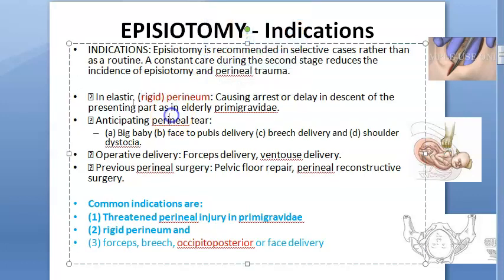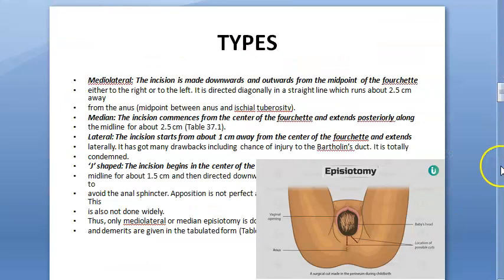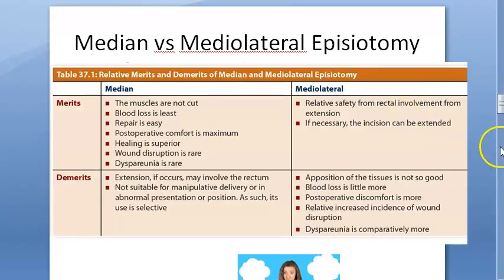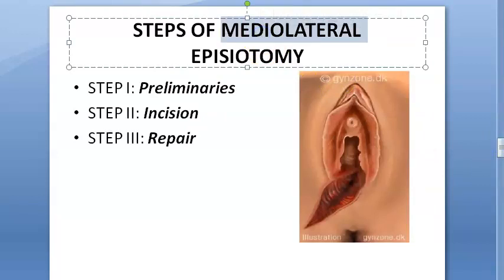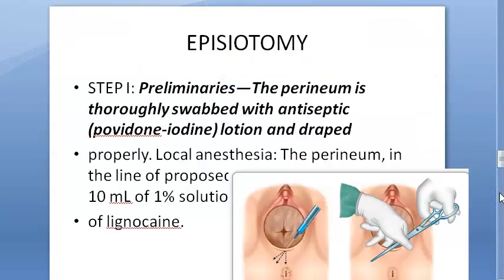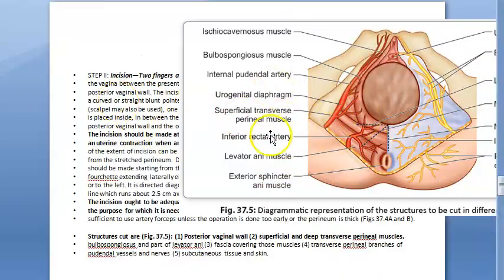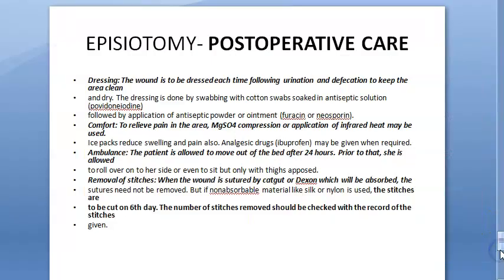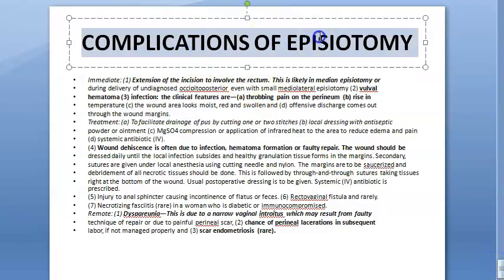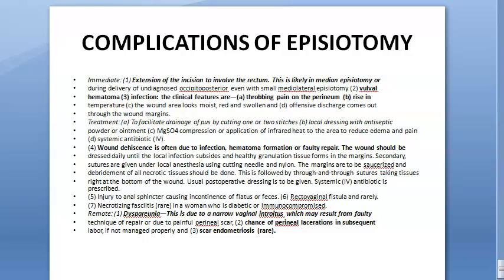An inelastic or rigid perineum is the better term. Now we are done with the indications of episiotomy. We will continue in the next video with: timing of episiotomy, types of episiotomy — medial, lateral, median, J-shaped — the difference between median and mediolateral, the steps of mediolateral episiotomy since it is more commonly done, what layers are cut, the steps of repair, post-operative care, and complications of episiotomy.